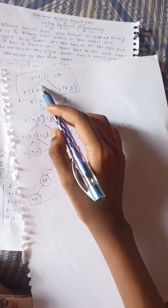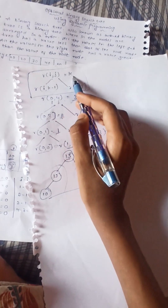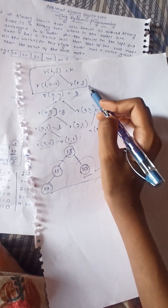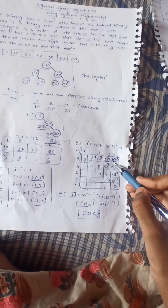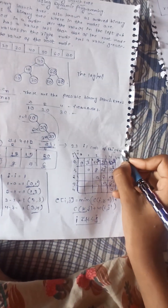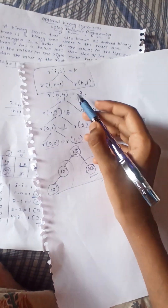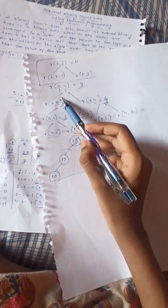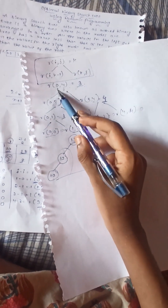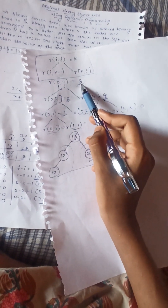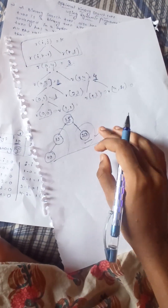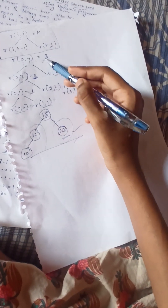Using this table we construct the optimal tree. The formula is: R(i, j) = k. The left side values are R(i, k-1) and the right side value is R(k, j). For R(0,4) = 44, root k equal to 3, so i=0, j=4. The left subtree is R(0, k-1) = R(0,2), which is the second root. The right subtree is R(k, j) = R(3,4), which is the fourth root.